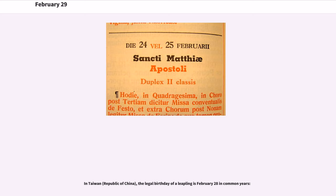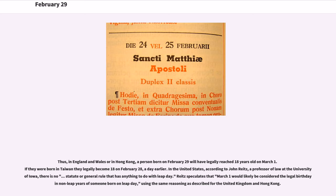In Taiwan, Republic of China, the legal birthday of a leapling is February 28th in common years. Thus, in England and Wales or in Hong Kong, a person born on February 29th will have legally reached 18 years old on March 1st, while if they were born in Taiwan, they legally become 18 on February 28th — a day earlier.